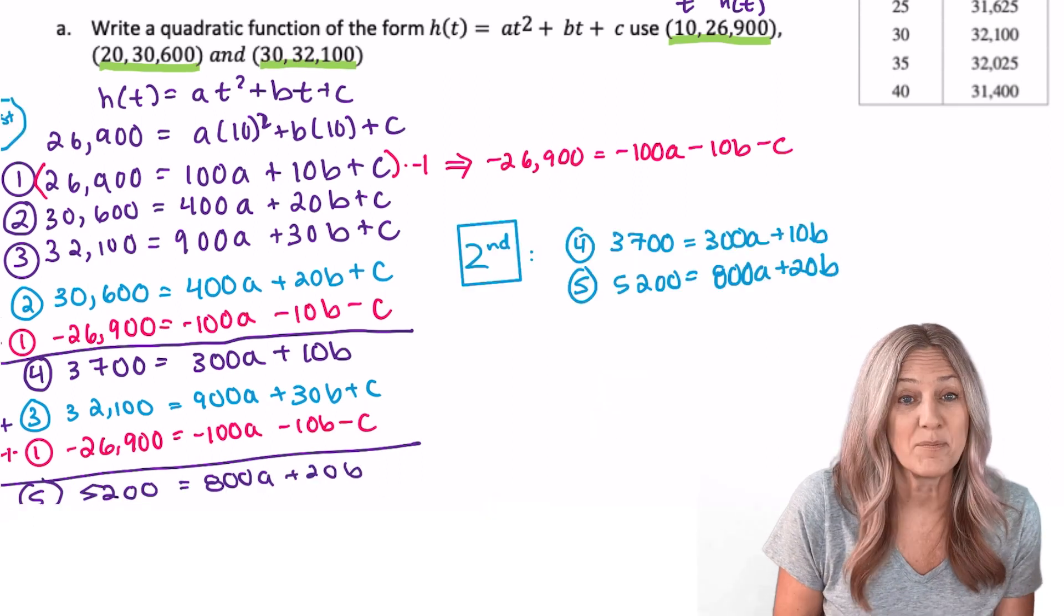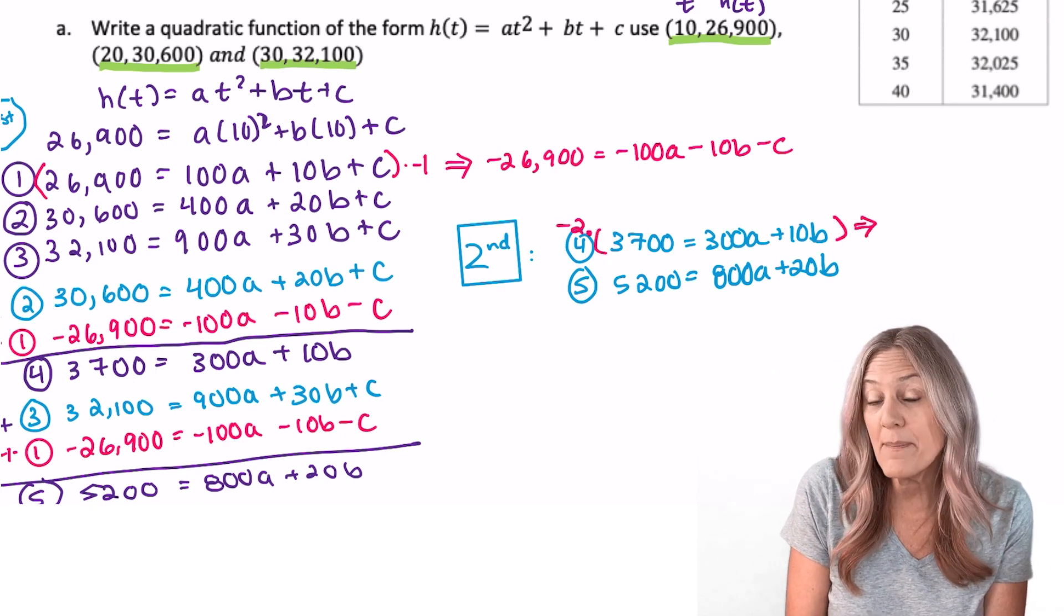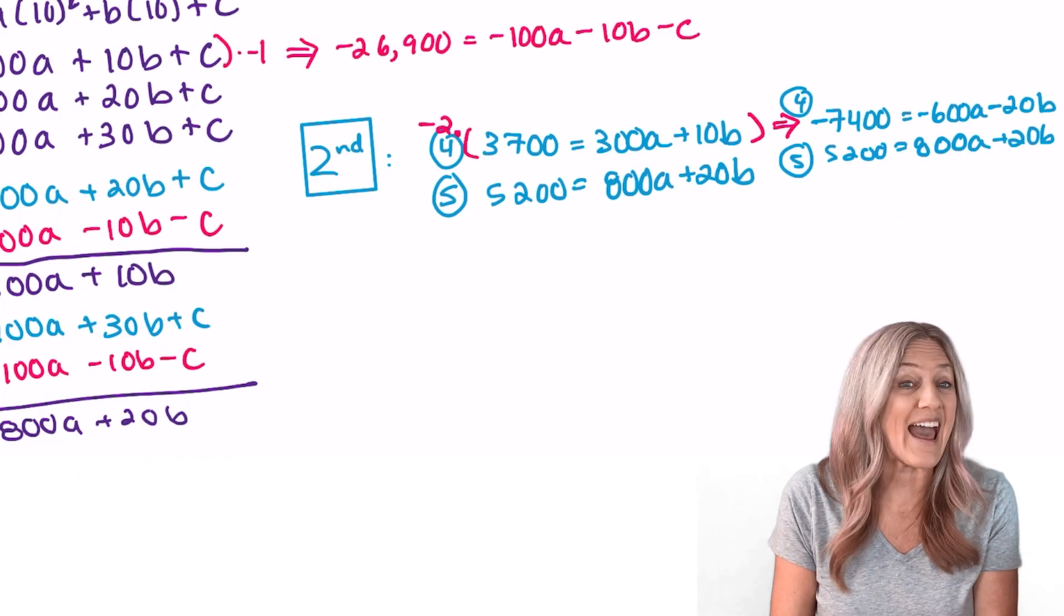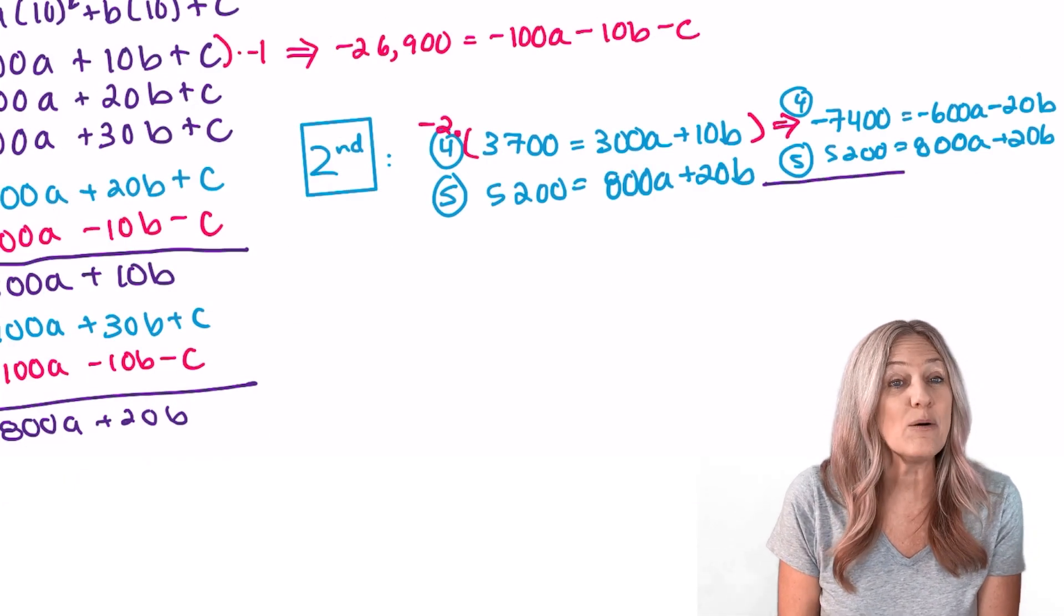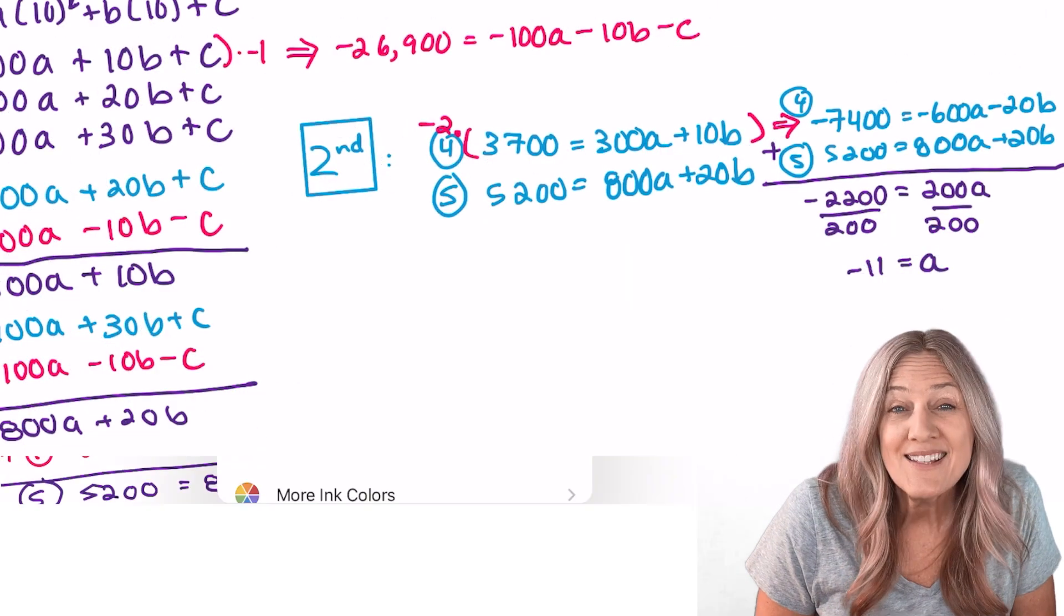Now we have a system of two variables two equations. Well let's just take equation four multiply by negative two and add it to equation five. That will add out our b terms. So a is negative 11.